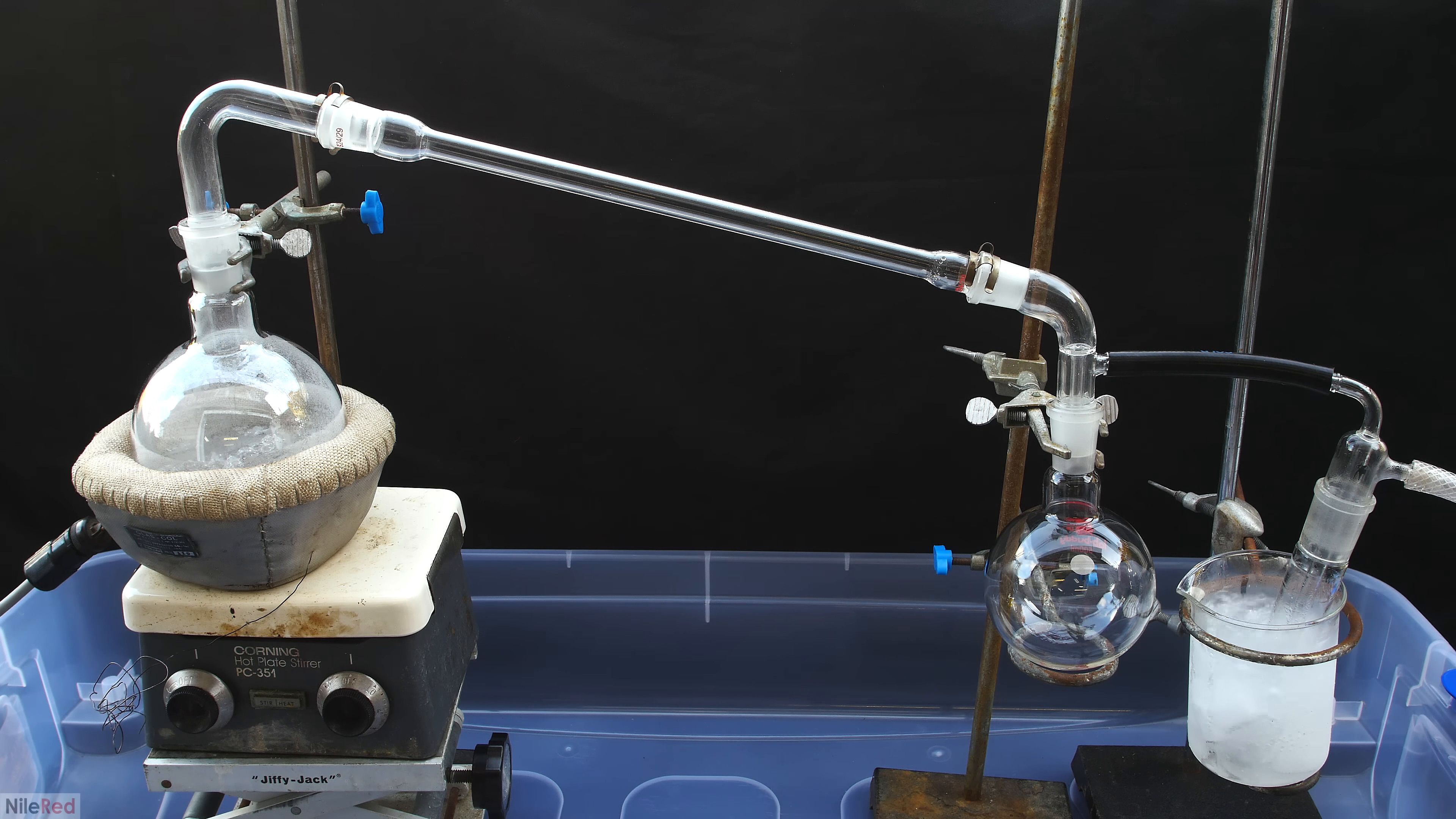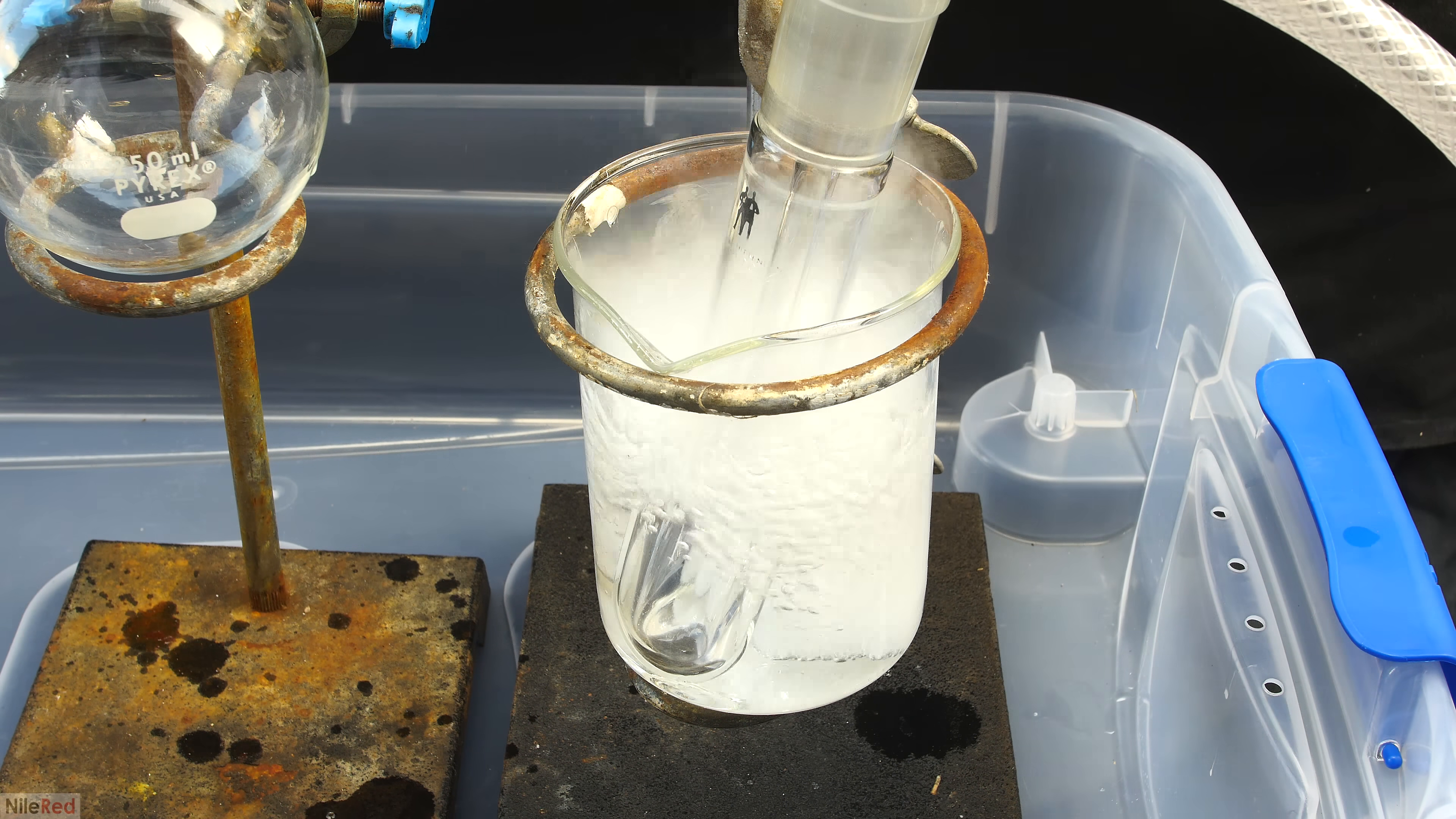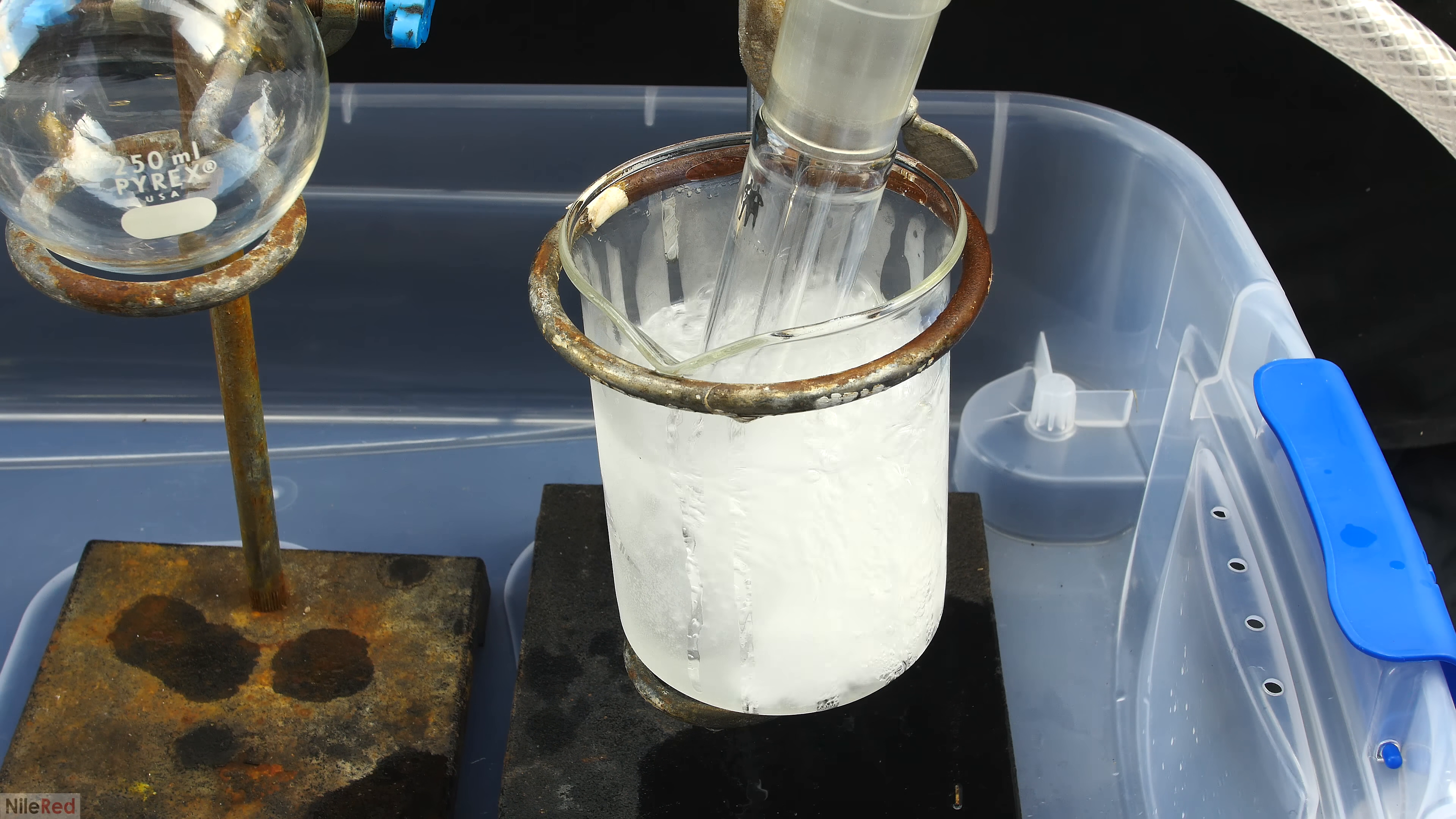In the beaker on the right, I also set up an isopropanol dry ice bath. This cold bath is really easy to set up, and all I need to do is pour in some isopropanol, and then drop in some dry ice. It's more common to make a dry ice bath using acetone, but I unfortunately only had 99% isopropanol on hand. When the dry ice is added, there will initially be a lot of bubbling as the isopropanol cools. After just a few minutes, it should settle down and become much more tame.